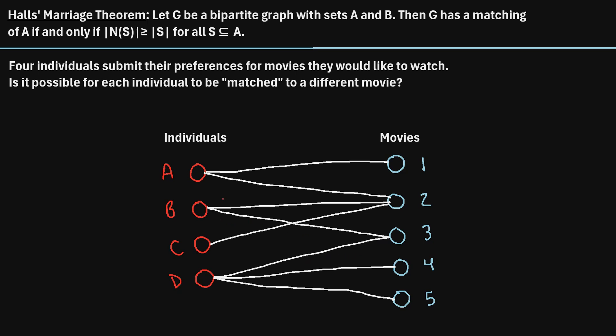So in this scenario, we're asking: is it possible to match each individual to a different movie? For Individual C, they said they're only willing to watch movie two, so let's start there — Individual C can be matched with movie two. From there, Individual A could be matched with movie one. Individual B could then be matched with movie three. And Individual D could be matched with movie four or five — let's say four. We've found a matching between the individuals and the movies such that each individual gets to watch a different movie.